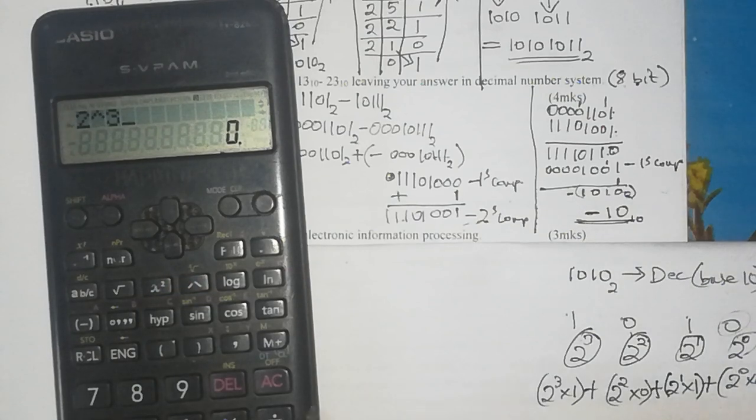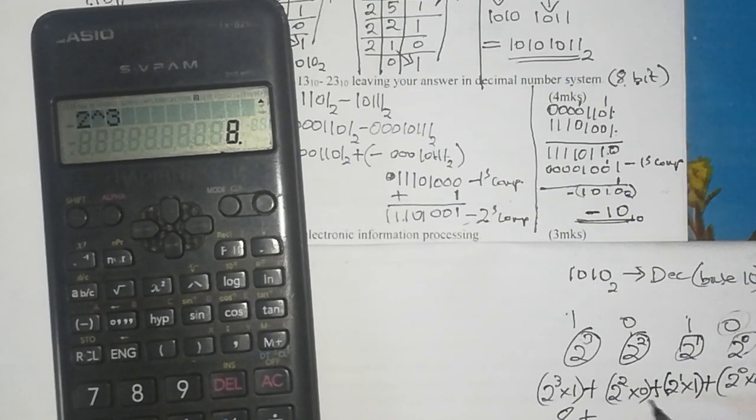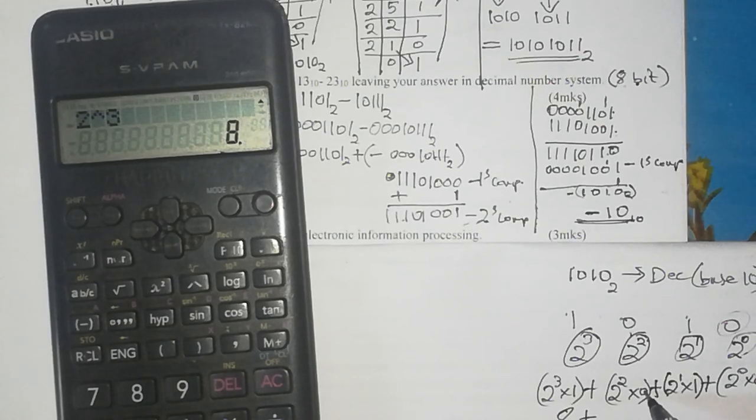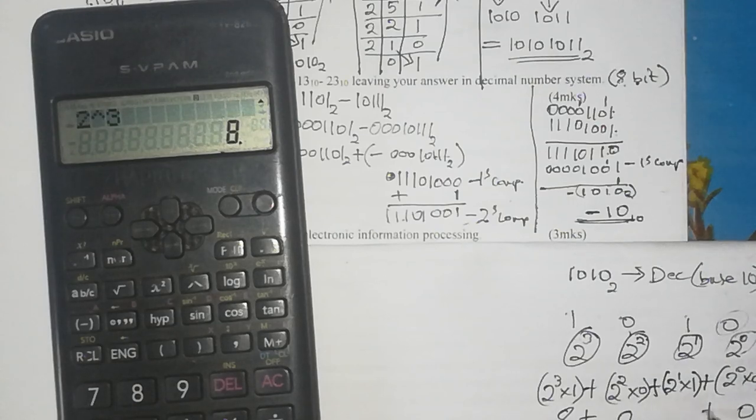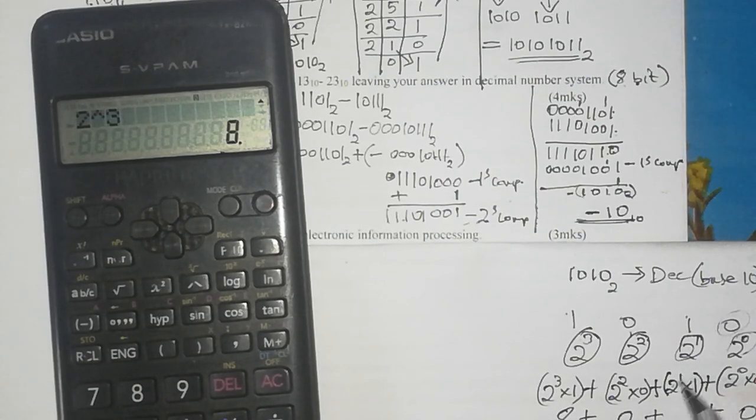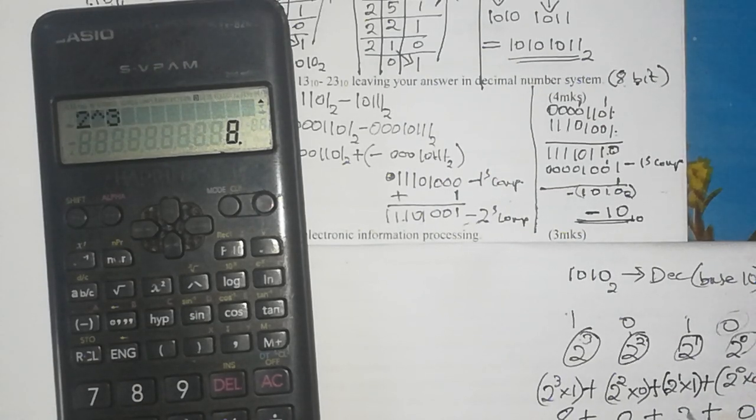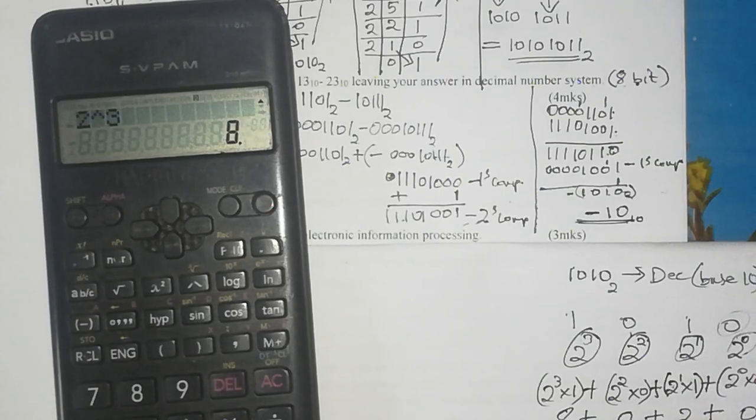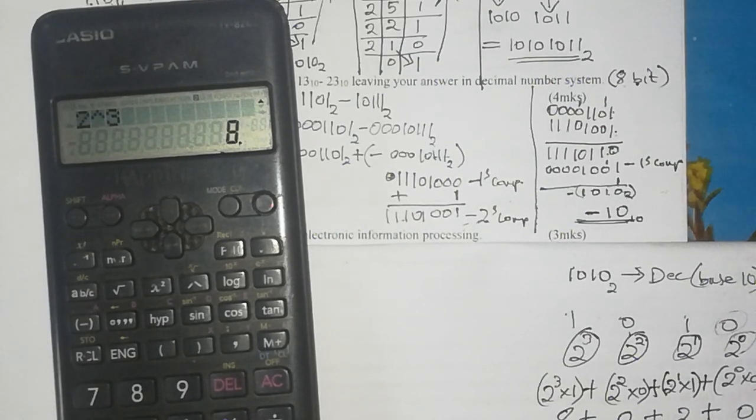So with the help of our calculator, 2 power 3 is 8. Now here because we are going to eventually multiply by zero, obviously the result for that is zero as well as this zero. And so 2 power 1 is 2 times 1 is 2, and 8 plus 2 is 10 base 10.